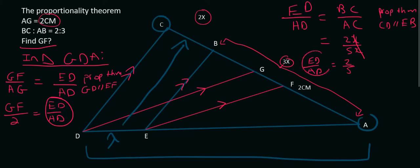The nice thing is though, is we now have ED over AD. So we can substitute it back over here. So we can say that GF over 2 is equal to 2 over 5. So if you do cross multiplying, we'll get GF is equal to 4 over 5.